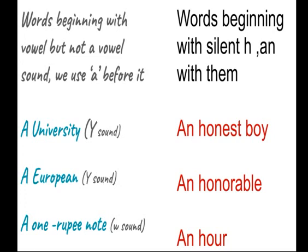Words beginning with a silent H also take an. When H is silent, we pronounce the vowel sound that follows. For example: an honest boy — H is silent, so an O sound comes. An honourable — H is silent again, O sound comes, so we use an. An hour — H is silent, O sound comes, so we use an.